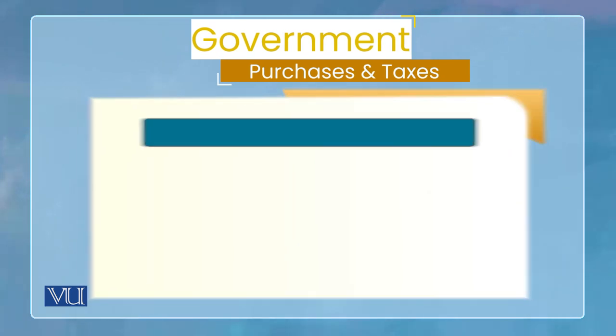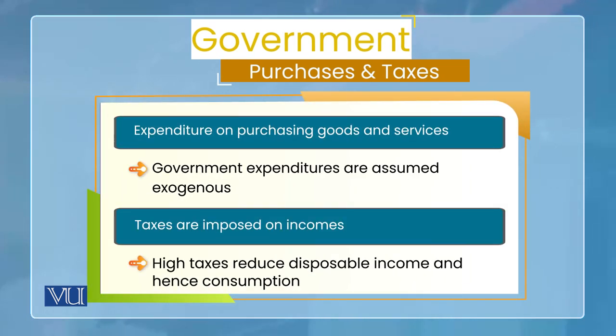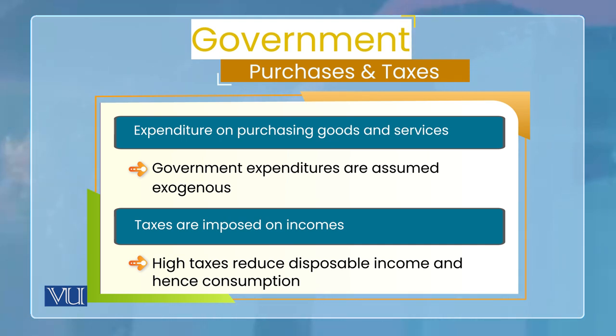हमारा एक और component जो aggregate demand का है, वो है government purchases। जो government purchases हैं, इसका मतलब है यह जो expenditure government करती है — government भी तो goods and services purchase करती है, labor services purchase करती है। Government public services deliver करने के लिए बहुत सारे inputs market से purchase करती है। लेकिन जो government के expenditure हैं, वो income का function नहीं होते — rather we take them as exogenous। हम assume करते हैं कि government के जो expenditure हैं, वो income के हिसाब से exogenous हैं, یعنی income पे dependent नहीं होते। लेकिन government के expenditure को finance करने के लिए जो taxes लगाए जाते हैं, वो mostly income के उपर ही लगाए जाते हैं।